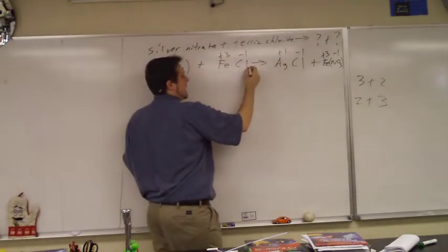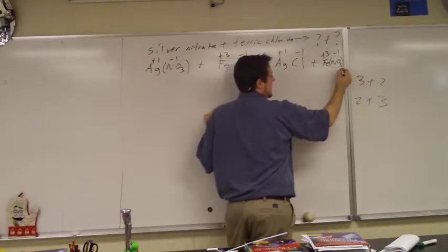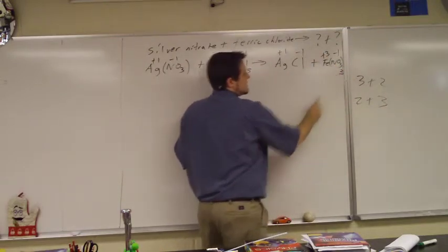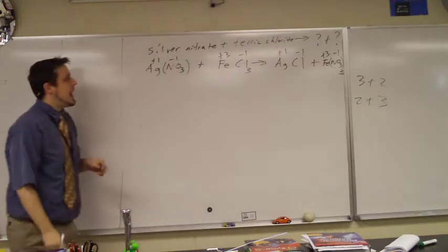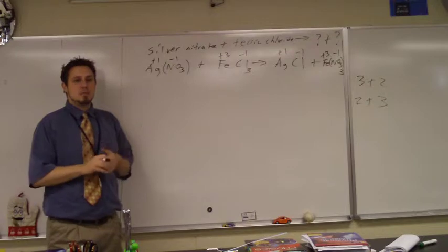Here, we're going to bring down a 3. 3, 1, 1, here we're going to bring down a 3, so that nitrate has just 3 of them. And now we have to do all the stuff that Andrew was saying. We have to balance starting with the polyatomics.